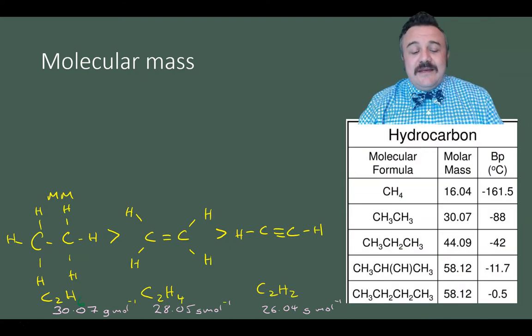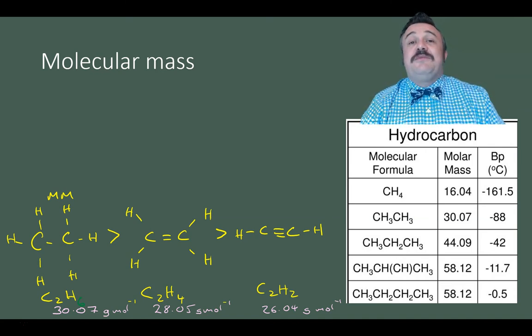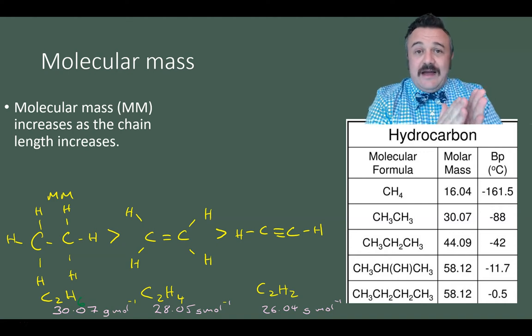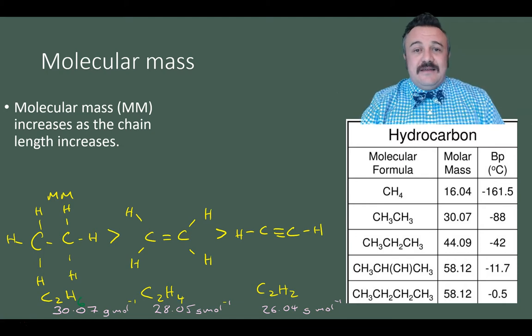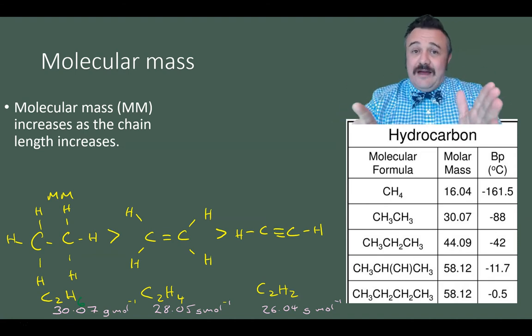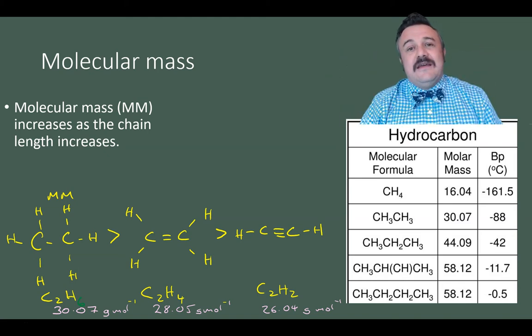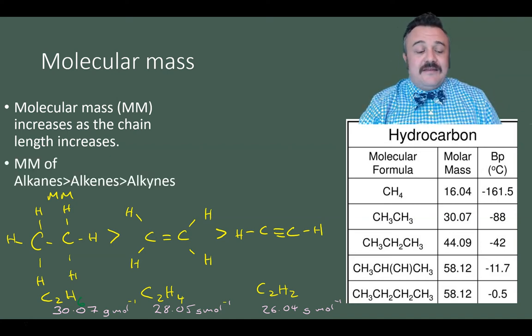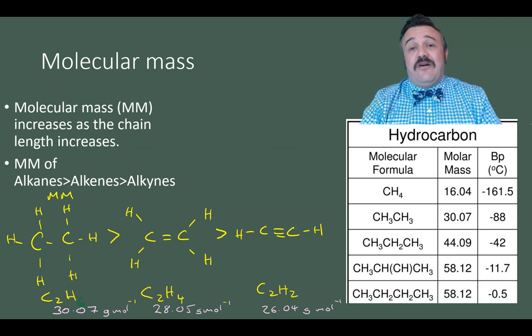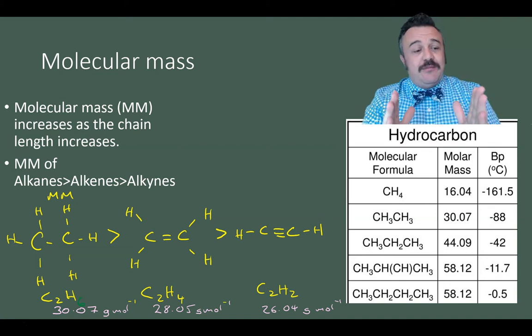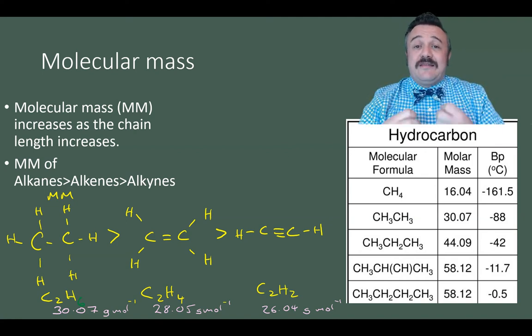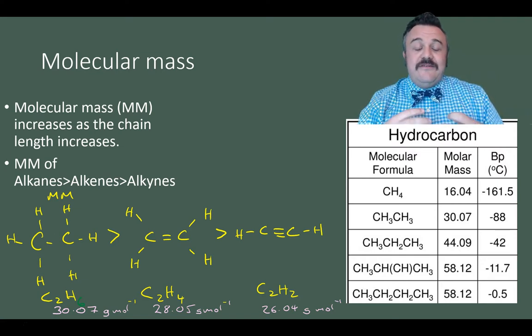So molecular mass, this one seems pretty straightforward. As the chain length increases, so as we go from one carbon to two carbons to three carbons and so on, we find that the molecular mass increases. That makes sense because we're going from one carbon with four light hydrogens around it to two carbons to three carbons. Obviously the molar mass is going to increase. But the molar mass of alkanes is going to be greater than the molar mass of alkenes, which will then be greater than the molar mass of alkynes. So if we have a three carbon alkane, propane, propane will be heavier, have a heavier molar mass than propene, which will have a heavier molar mass than propyne.